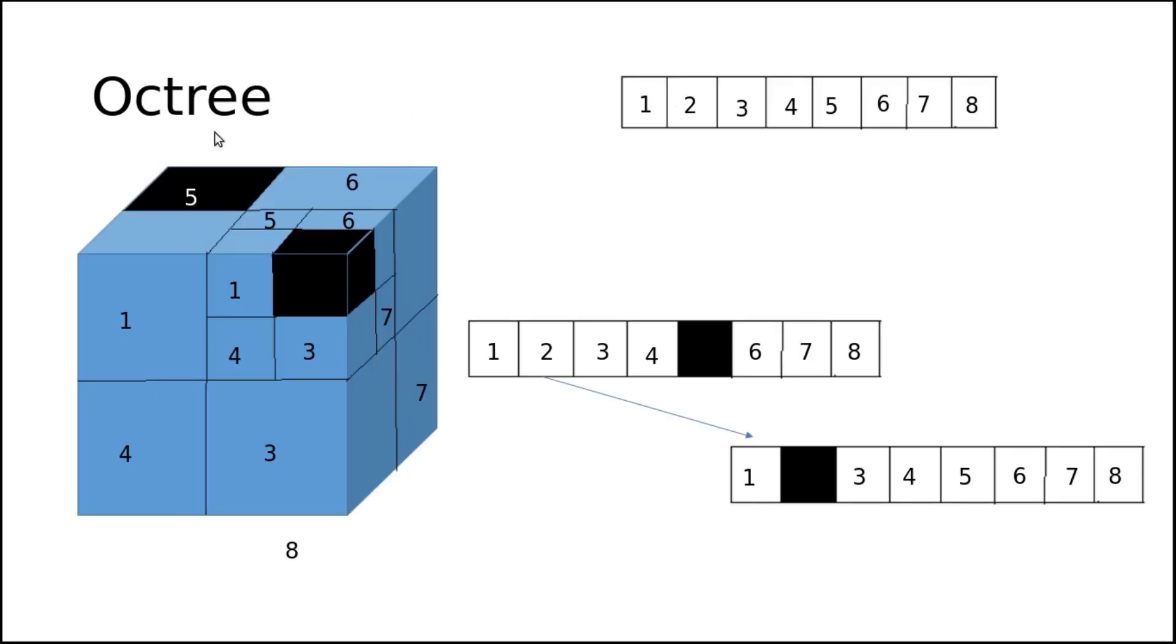Next is octree representation. It is used for 3D object representation. The same concept of quadtree is extended for the octree. In octree, the whole space is divided into 8 parts because it is a cube.